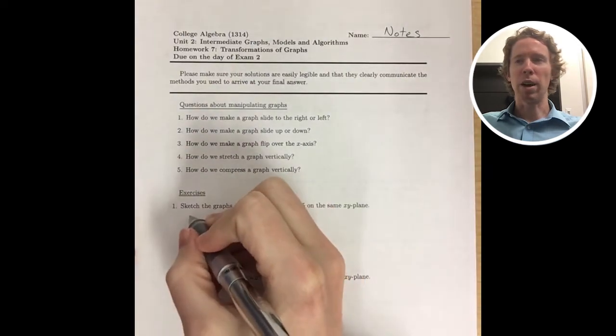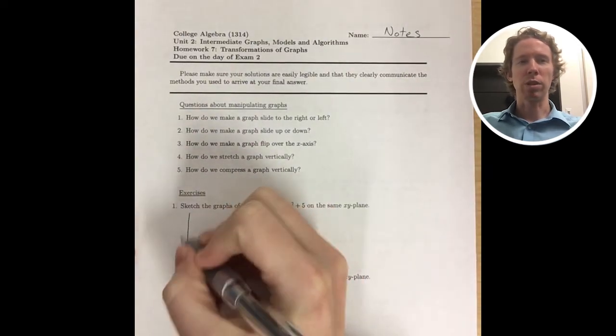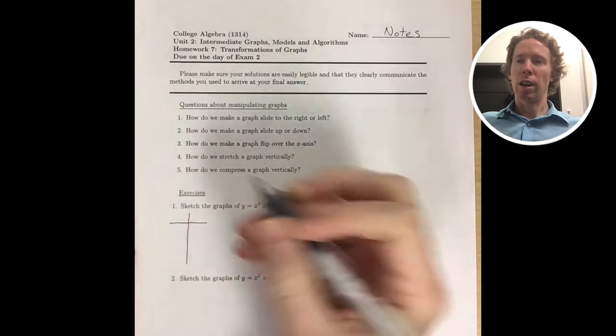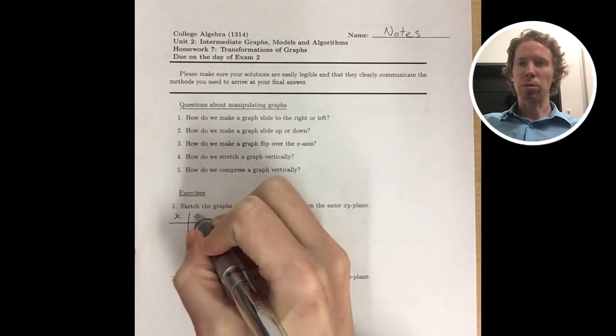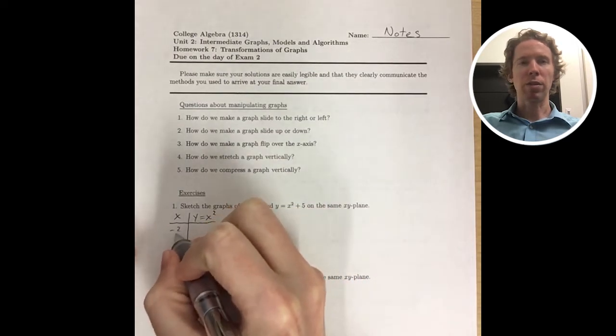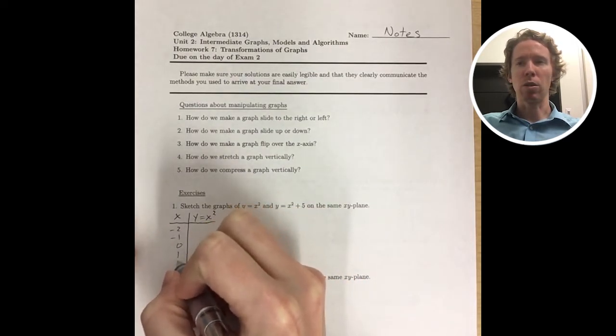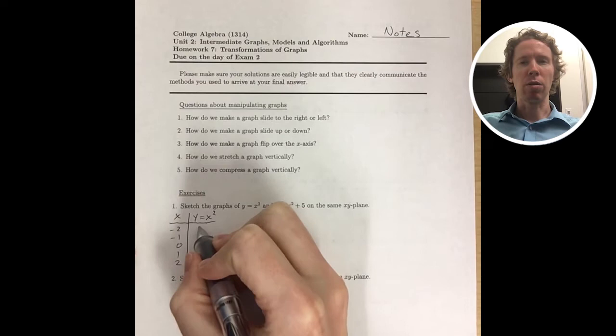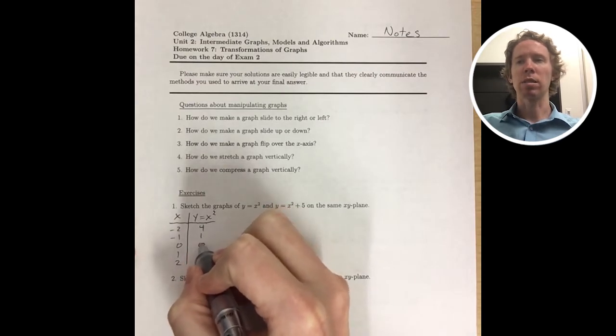I'm going to start out this problem by sketching the graph of y equals x squared. And to be very clear about what I'm doing, I'm just going to make a table of values. Pick some x values centered around the y axis, because I know the vertex of this one will happen at the y axis.